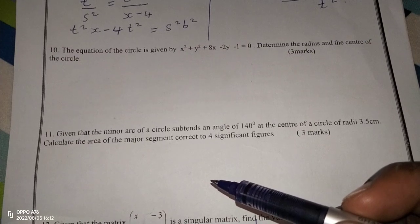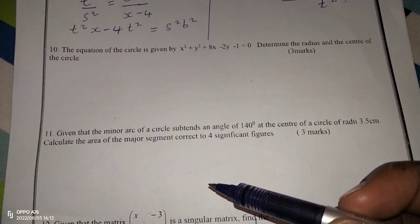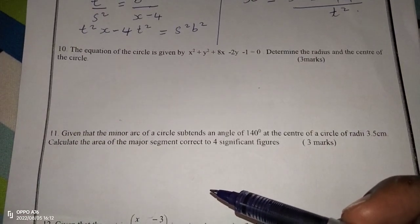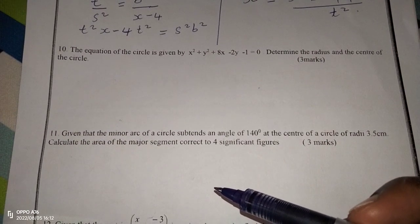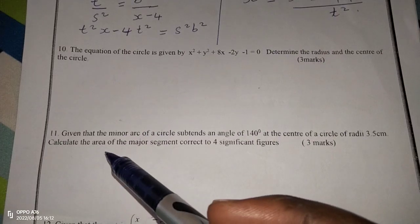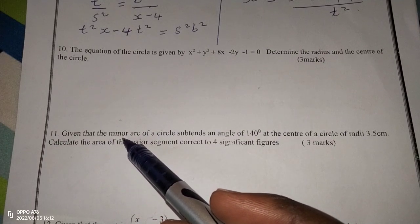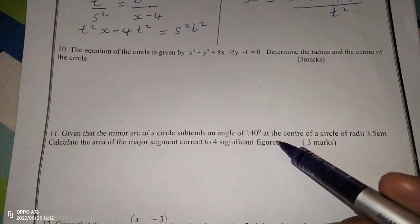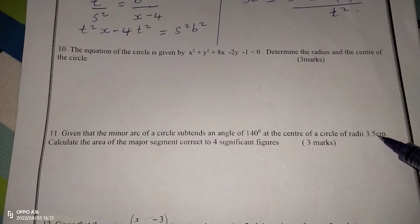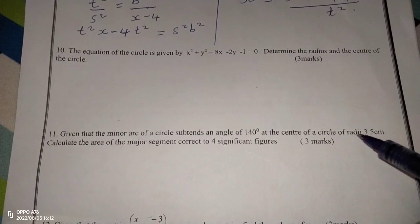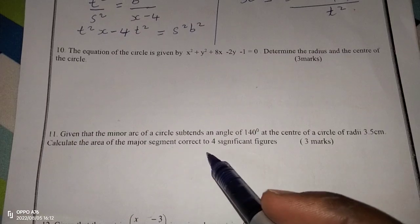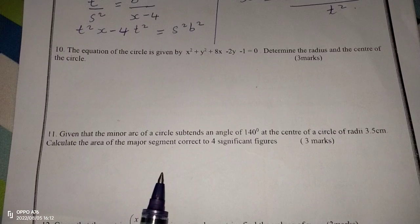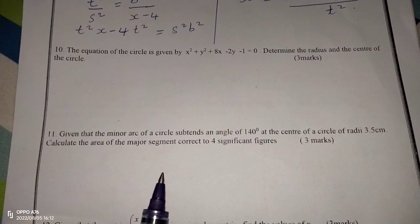Thank you for joining this lesson. We are going to look at the calculation of area of part of a circle, and in this case you'll be looking at the area of the major segment in a given circle. So we are told given that the minor arc of a circle subtends an angle of 140 degrees at the center of the circle of radius 3.5 centimeters. Calculate the area of the major segment correct to four significant figures. Remember to subscribe to this channel and to also share the link with your friends.